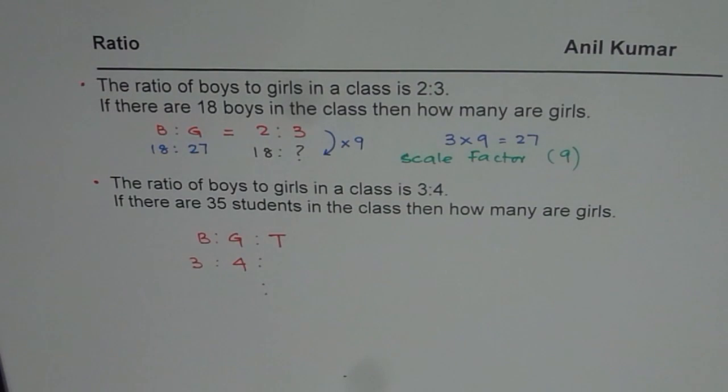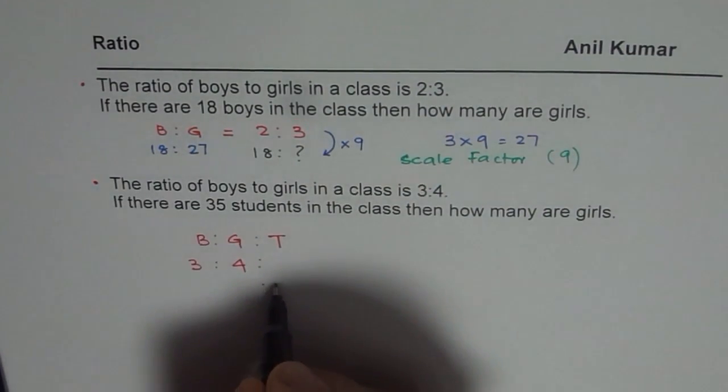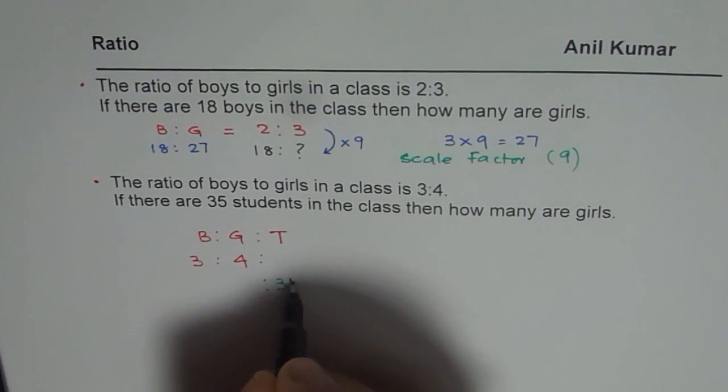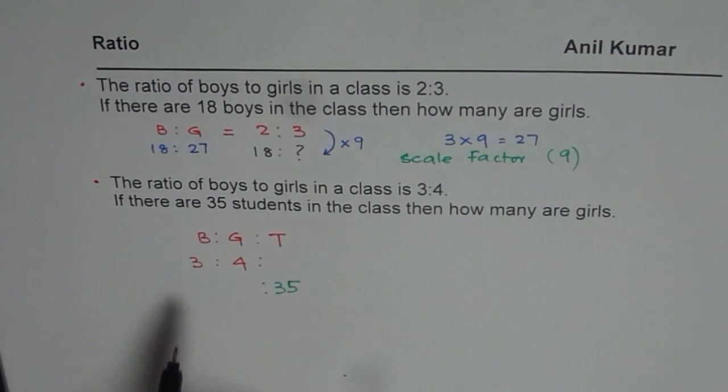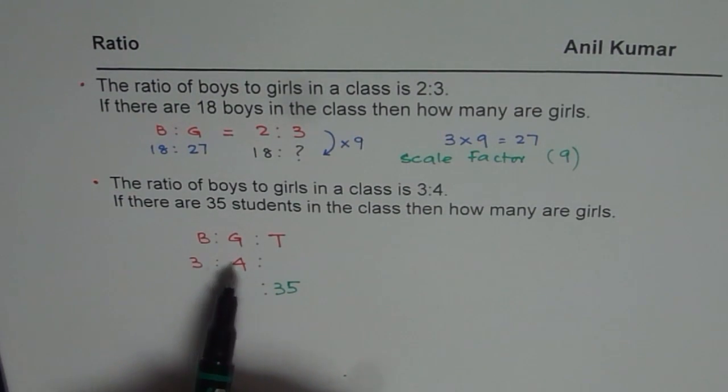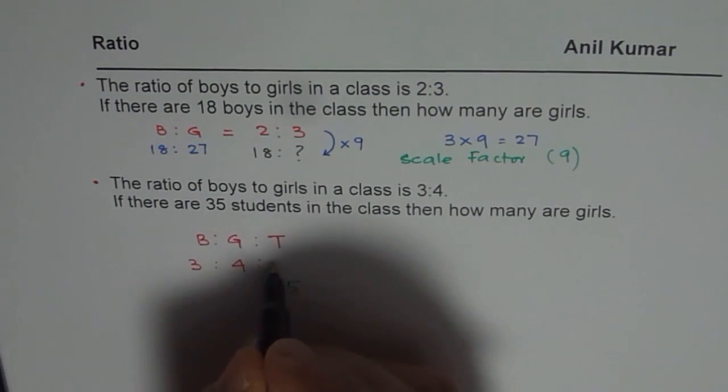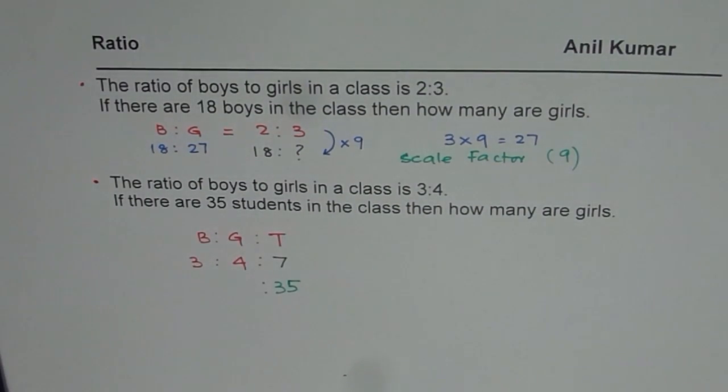So in our case we are given the total. We will write down the total here, 35. That is given to us. But if I add 3 and 4 what do I get? If I add 3 and 4 I get 7. So if the ratio is 3 is to 4 the total number of boys and girls will be 7.